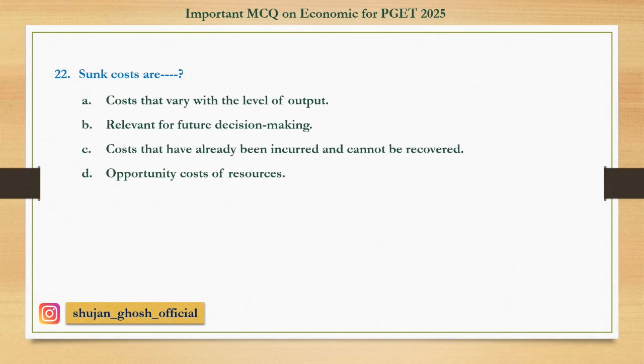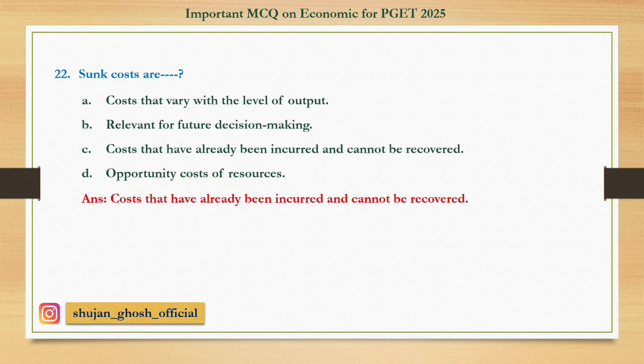Question number twenty-two: Sunk costs are — option A: costs that vary with the level of output; B: relevant for future decision making; C: costs that have already been incurred and cannot be recovered; D: opportunity cost of resources. Answer: costs that have already been incurred and cannot be recovered.